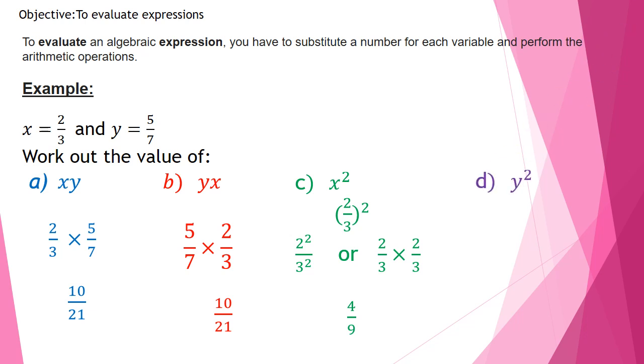Part D, y squared. So I have to substitute y by 5 over 7 exactly in the same way. Don't forget the brackets to show that the square is for both numerator and denominator. 5 squared over 7 squared or 5 over 7 times 5 over 7. 5 squared, which is 5 times 5, gives you 25. 7 squared, which is 7 times 7, gives you 49. The answer is simplified and reduced.